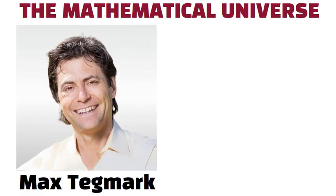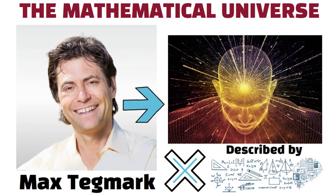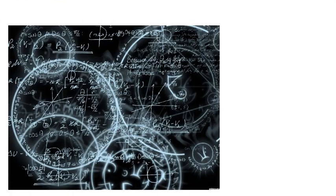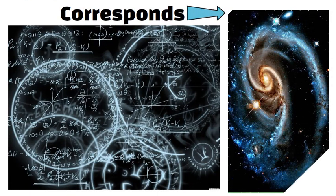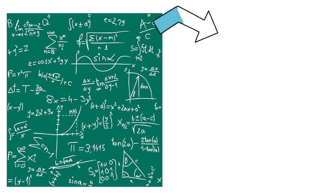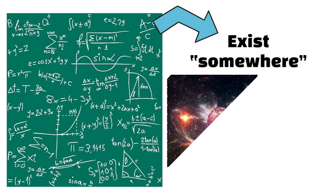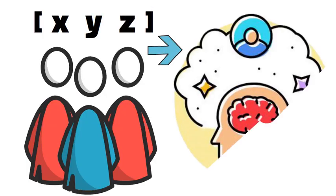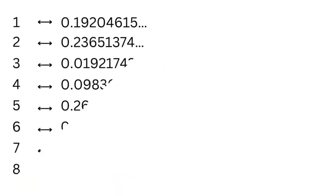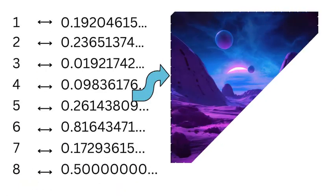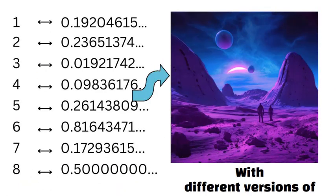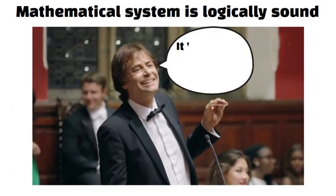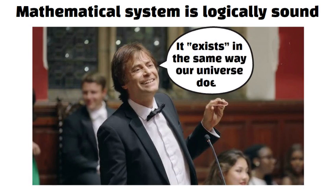The Mathematical Universe. Physicist Max Tegmark proposed that reality isn't merely described by mathematics. It is mathematics at its core. Every consistent mathematical structure corresponds to a real universe. In that sense, all possible mathematical systems exist somewhere, forming the ultimate multiverse. We happen to inhabit one particular set of equations that allows conscious beings. Maybe there are infinite other sets, each supporting its own bizarre universe with different versions of physics or geometry. If a mathematical system is logically sound, Tegmark argues, it exists in the same way our universe does.